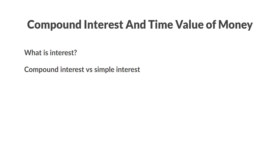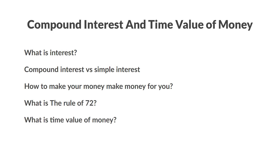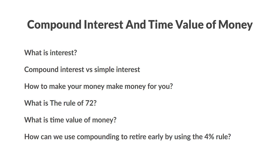What is interest? How does compound interest differ from simple interest? How to make your money make money for you? What is the rule of 72 and the time value of money? And most importantly, how can we use compounding to retire early using the 4% rule? In this video, we will go over all of those topics and add more important details to the story.